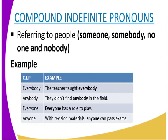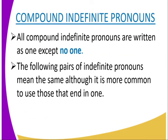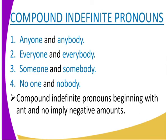You can also use 'anyone': 'With revision materials, anyone can pass an exam.' All compound indefinite pronouns are written as one word except 'no one'. So somebody, someone, something — all written as one word, except 'no one'. The following pairs of indefinite pronouns mean the same, although it is more common to use those ending in 'one': anyone and anybody — you mostly use 'anyone' over 'anybody'.